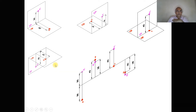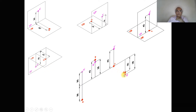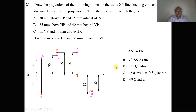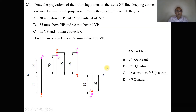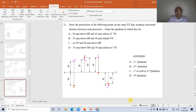For point D — below HP and in front of VP — the below HP view is seen in VP and the in-front-of VP view is seen in HP. When HP is rotated down, both the front and top views fall below the XY line. This is how we analyze this problem. Now we will try to solve it using AutoCAD software, so first we will go to the AutoCAD screen.